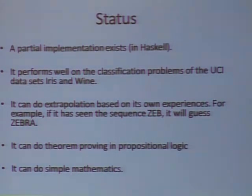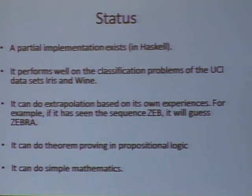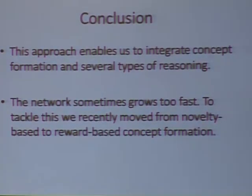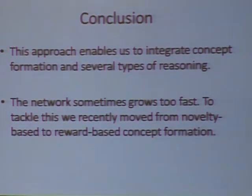A partial implementation exists in Haskell. It performs well on some classification problems from the IRIS and WINE datasets. It can do extrapolation based on its own experiences — typically it would guess 'zebra' if it sees 'zeb'. It can also do theorem proving in propositional logic and some simple mathematics. This approach enables us to integrate concept formation and several types of reasoning. A problem is that the network grows too fast sometimes, so we introduced a notion of reward and moved from novelty-based to reward-based concept formation, which seems to be a good move.